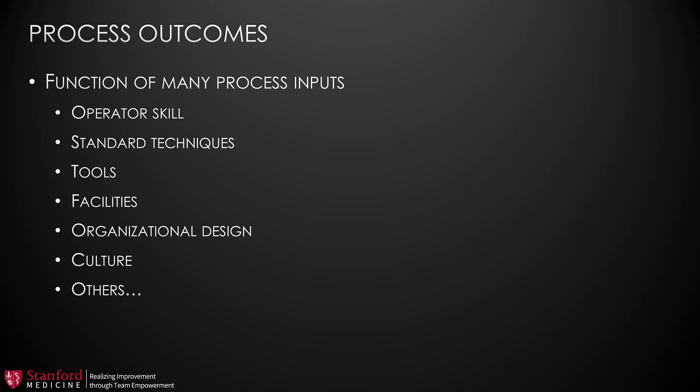Again, most of the time, the outcomes that a process produces are a function of not just one input, but many inputs. For example, they may depend on operator skill, the consistent use of standard techniques, tools, facilities, organizational design, culture, and most likely a whole host of factors. It's important to recognize that we cannot directly control the outcomes. We can only control the inputs and change them in a way that will produce the outcomes that we want.